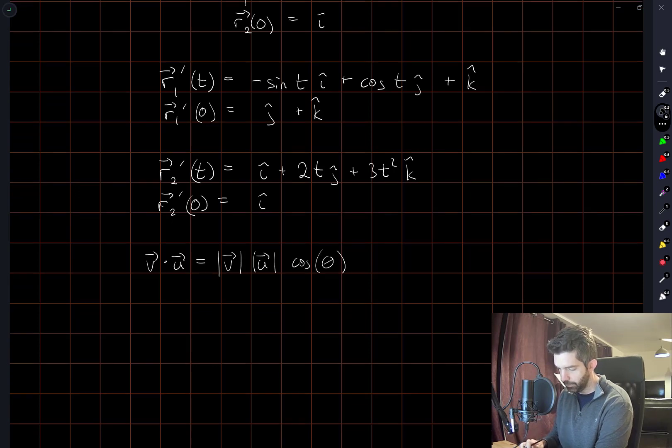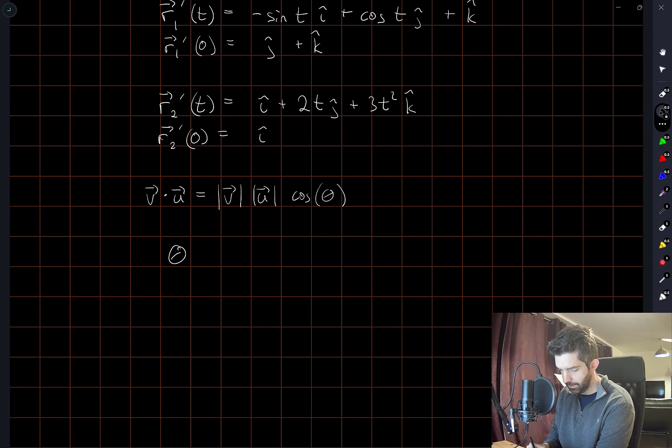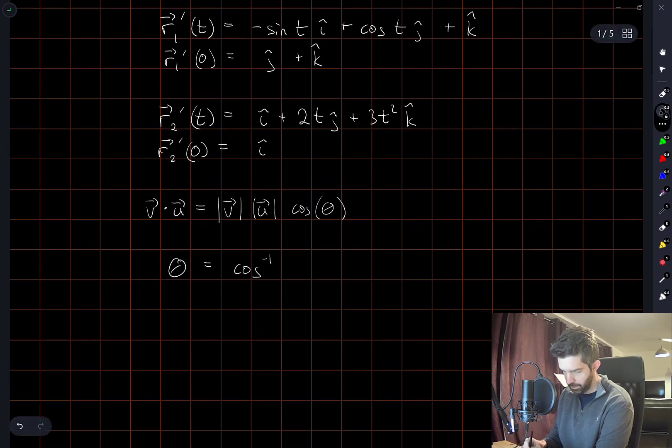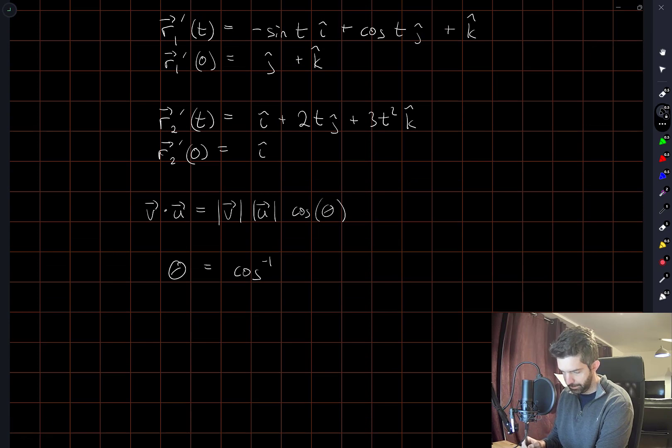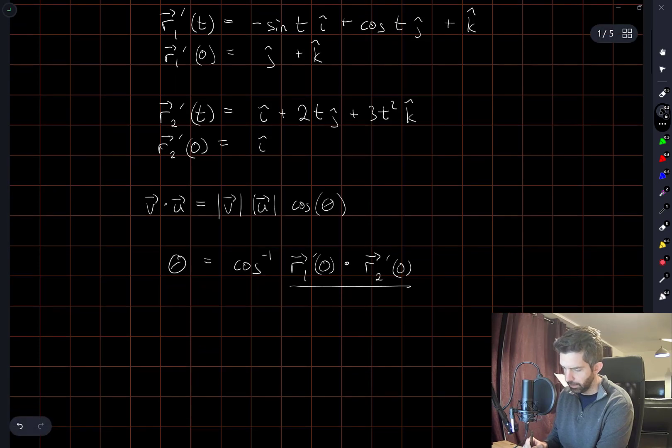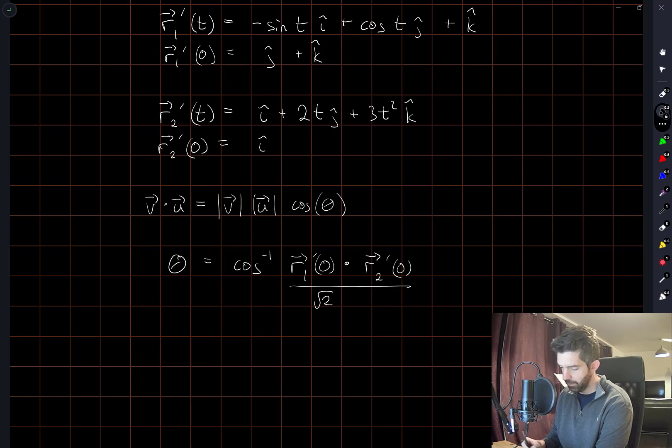Theta will be this. And so what I need, theta, will be cos inverse of the dot product divided by the magnitude. We should be able to read the magnitude of these things pretty easily. R1 prime has a magnitude of root 2, and r2 prime has a magnitude of 1.